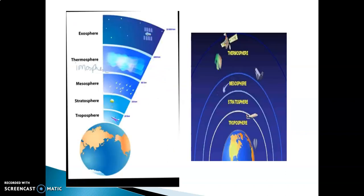This is the diagram of the layers: Troposphere, Stratosphere, Mesosphere, Thermosphere, and Exosphere.